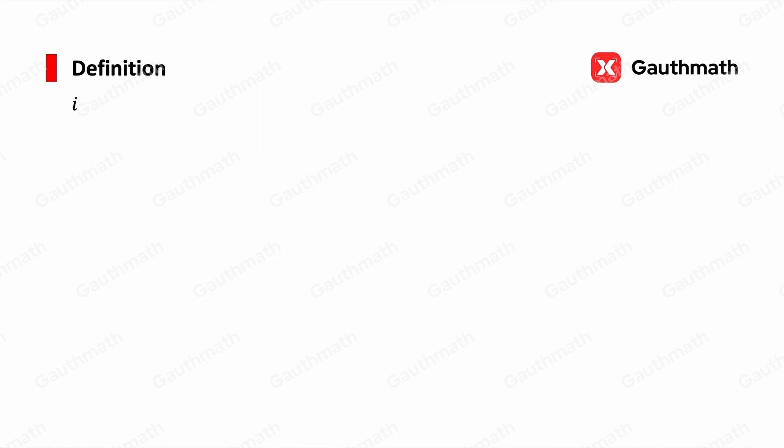So i is the imaginary unit, and i squared equals negative 1. So i equals the square root of negative 1.